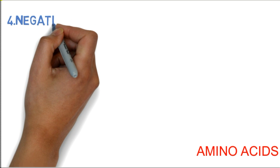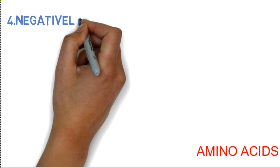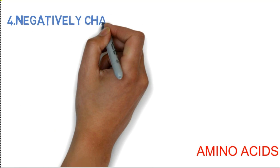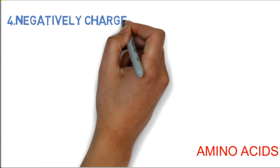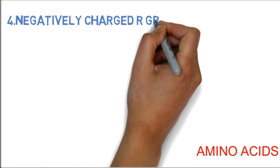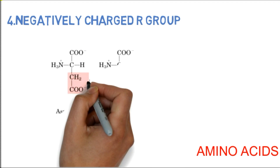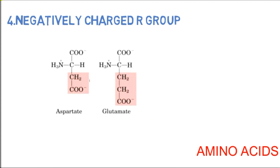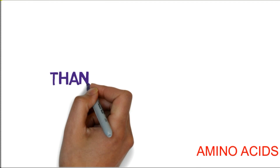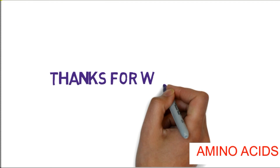The fourth group is the negatively charged R group. If a negatively charged R group is attached, it is called a negatively charged amino acid. There are two amino acids in this group: aspartate and glutamate. I hope this video is helpful to you guys, thank you.